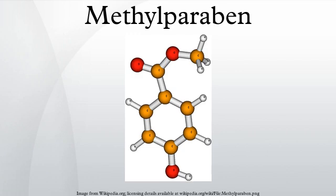Uses: methylparabene is an antifungal agent often used in a variety of cosmetics and personal care products. It is also used as a food preservative and has the E-number E218. Methylparabene is commonly used as a fungicide in drosophila food media.